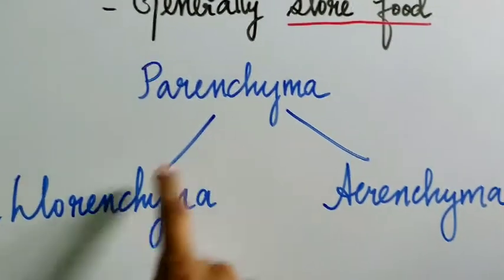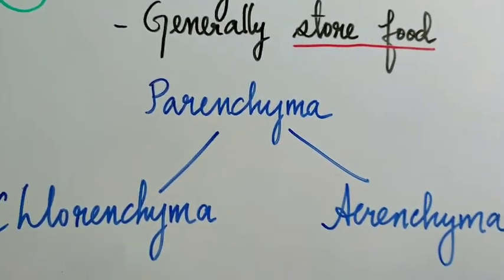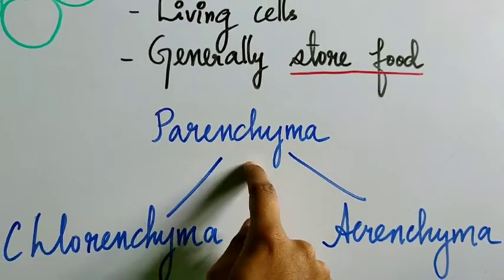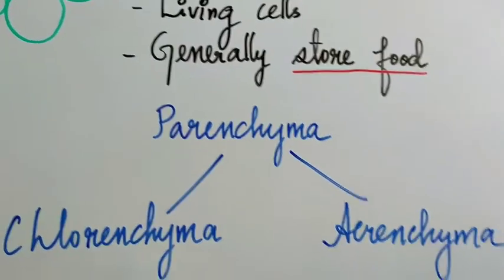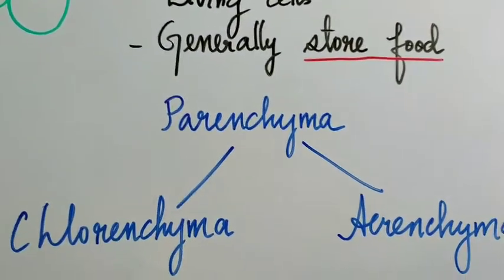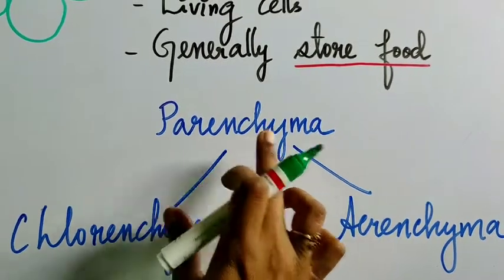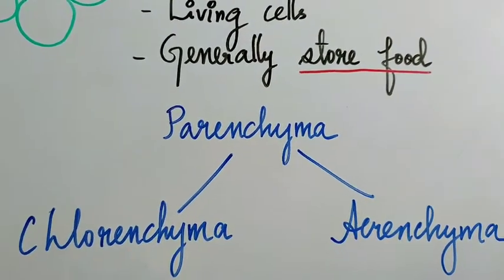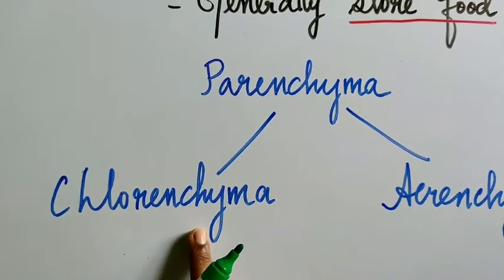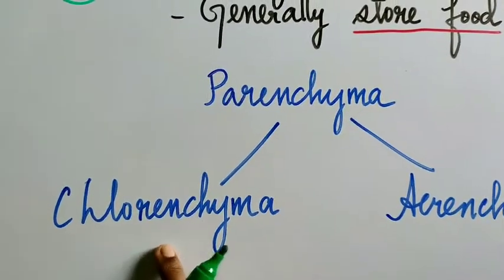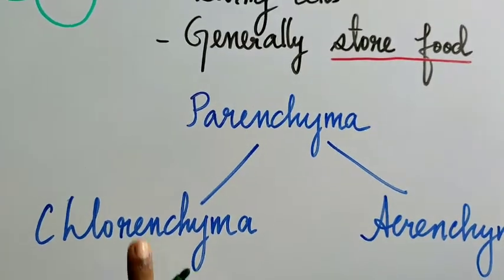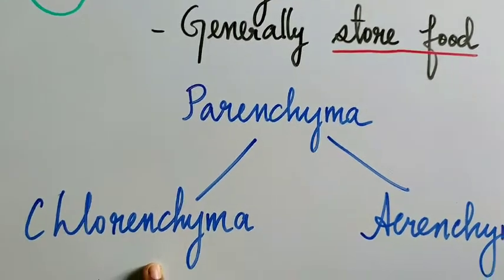There are two special types of parenchyma. Sometimes parenchyma cells contain chlorophyll and are involved in the process of photosynthesis — such parenchyma are called chlorenchyma. Please make sure you write and learn the spellings carefully.